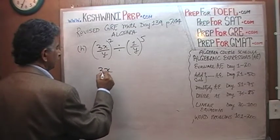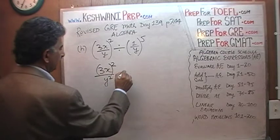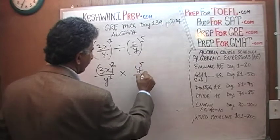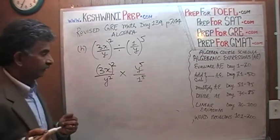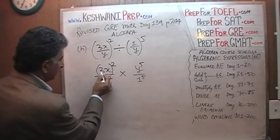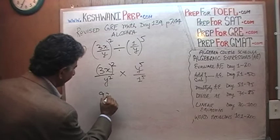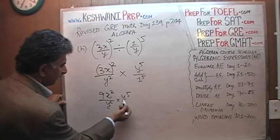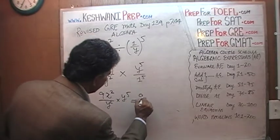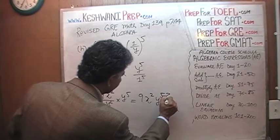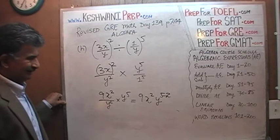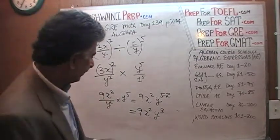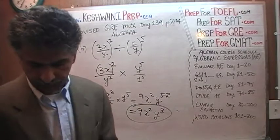For part H, the top is 3x squared over y squared. Multiplying by the reciprocal, 1 over y becomes y over 1, giving y to the 5th. 3 squared is 9, x squared stays x squared, and we have y squared times y to the 5th on the bottom — subtracting exponents gives y raised to 5 minus 2. The final answer is 9x squared times y raised to the 3rd.